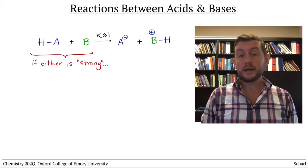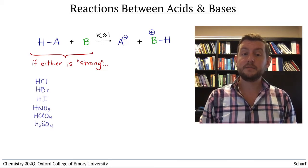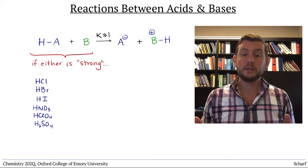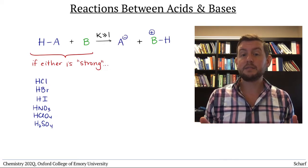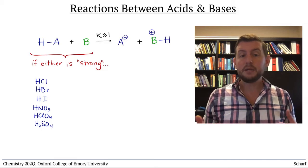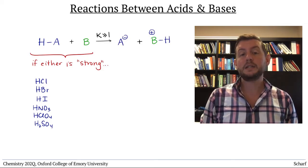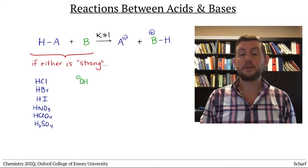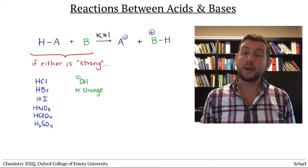You've already memorized the six strong acids. They're the acids with Ka greater than 1 and pKa less than 0. And for the time being, we'll consider strong bases to be those with Kb greater than 1, that is, at least as strong as OH minus.